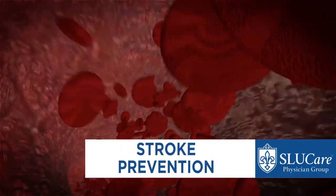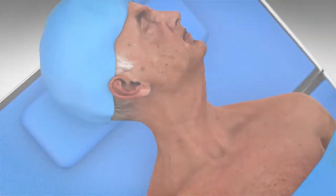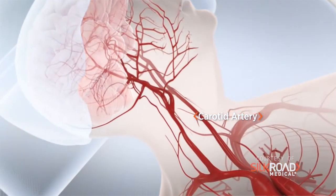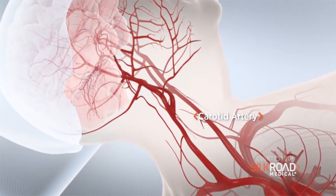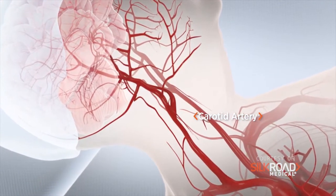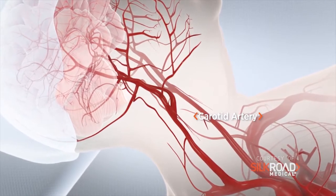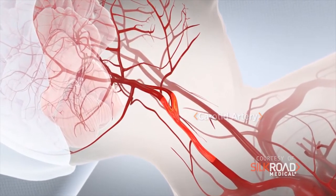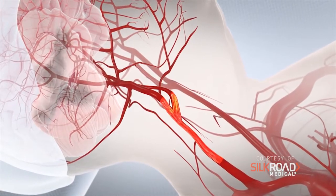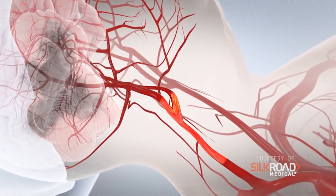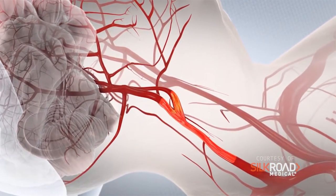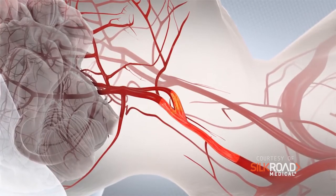Carotid artery disease is blockage of the carotid arteries in your neck. There are two carotid arteries, one on the right side and one on the left side, and they basically provide blood flow to your brain. So if you get a blockage in those arteries, it can diminish flow to the brain, but more importantly, debris from those blockages can be dislodged and go to the brain and cause a stroke.